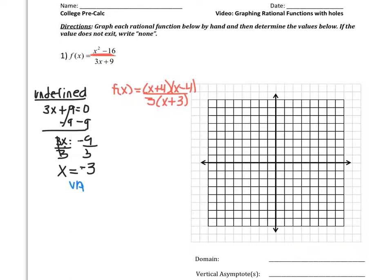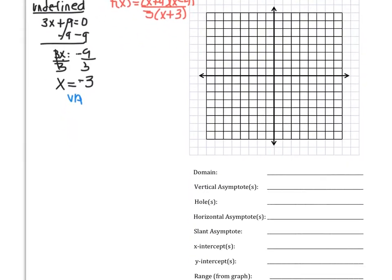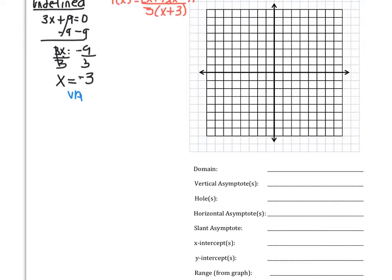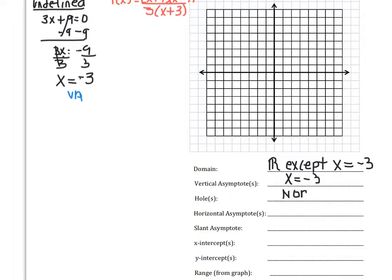So we have some information we can fill in. We have the domain — all real numbers except the undefined values, so except for when x is equal to negative 3. We have our vertical asymptote, which is the line x equals negative 3. And we don't have any holes because nothing crossed off, so we're going to write none for holes.